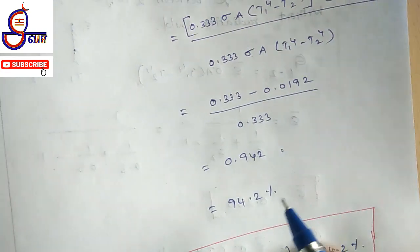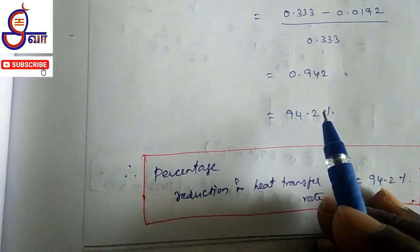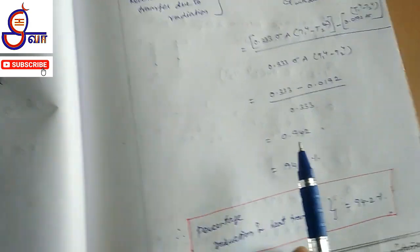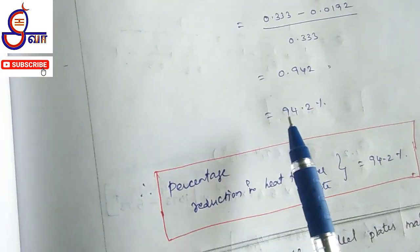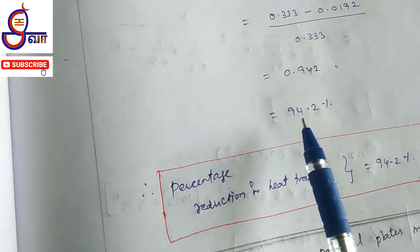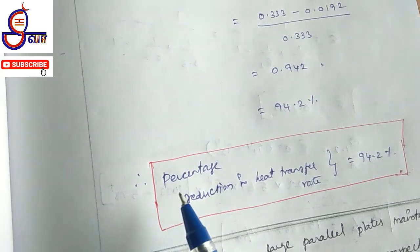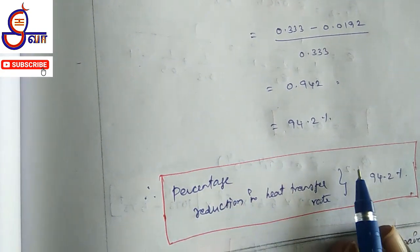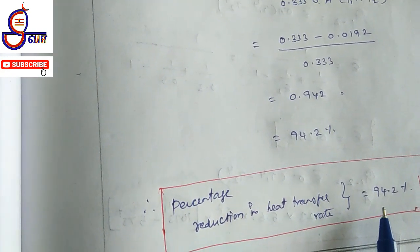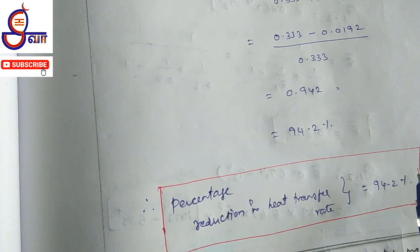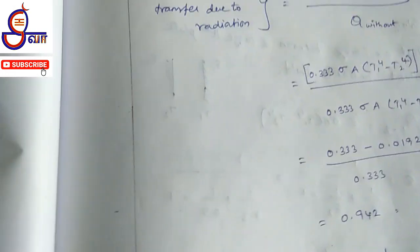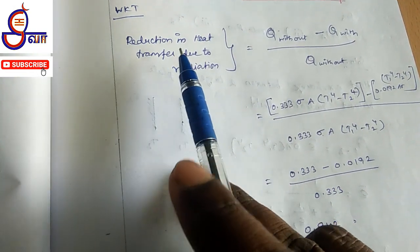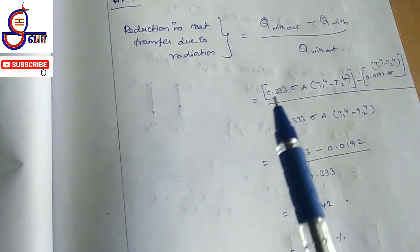It will simply be 0.942. So the percentage reduction is 94.2%. The total percentage reduction in heat transfer rate is 94.2%. We can solve the problem with this value.